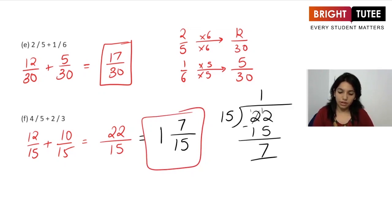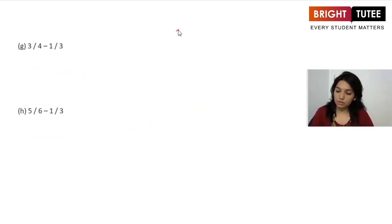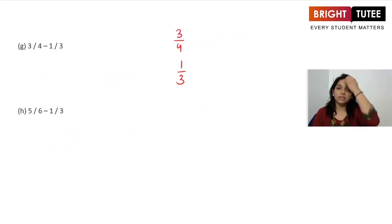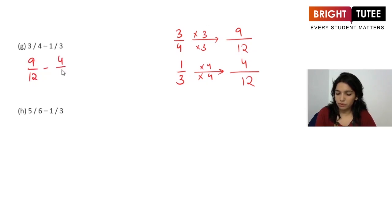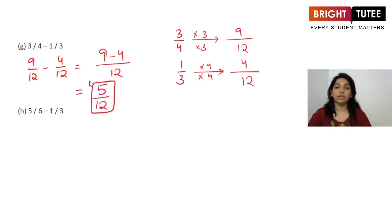Now a subtraction question: 3/4 minus 1/3. Converting: LCM of 4 and 3 is 12. Multiplying by 3 and 4 respectively gives 9/12 and 4/12. Subtracting: 9/12 minus 4/12 — we just subtract the numerators, denominator stays. The answer is 5/12.